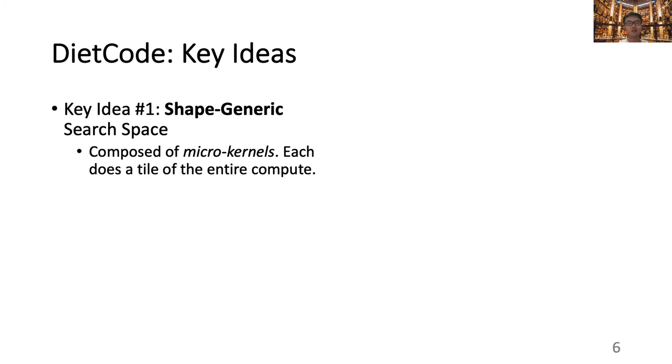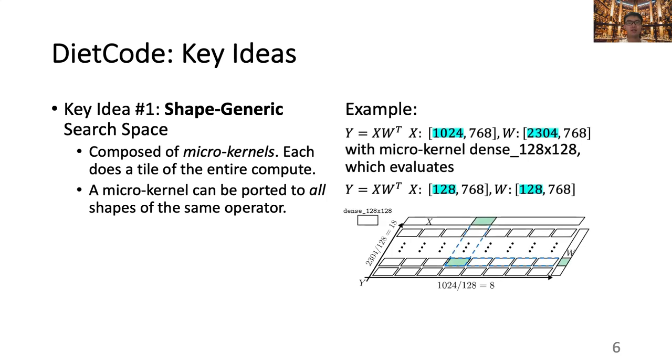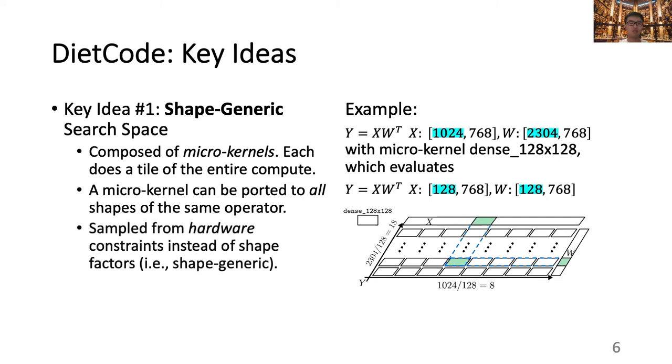Our first key idea, shape-generic search space, constructs a search space that is composed of micro-kernels. Each micro-kernel does a tile of the entire compute and can be ported to all shapes of the same operator. As an example, on the right-hand side of the slide, we are illustrating how the micro-kernel dense 128 by 128 can be used to realize the compute 1024 times 2304 by replicating itself 8 times 18 times along the spatial dimensions. The micro-kernels are sampled mostly from the hardware constraints instead of the shape factors, hence they form a shape-generic search space.